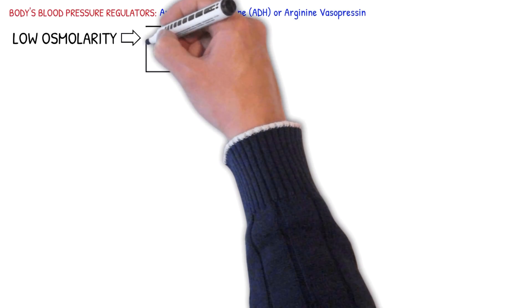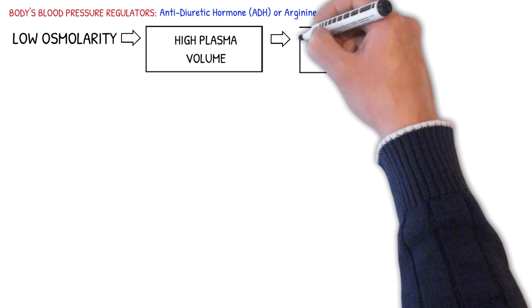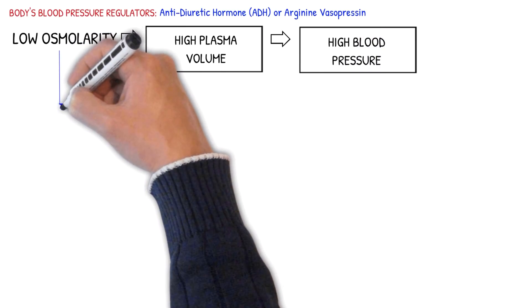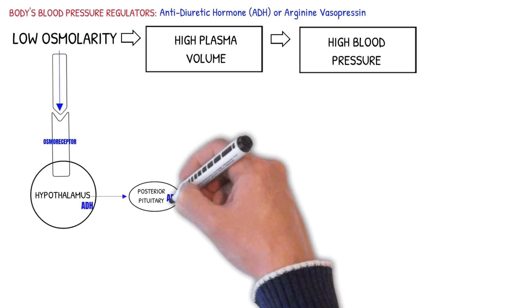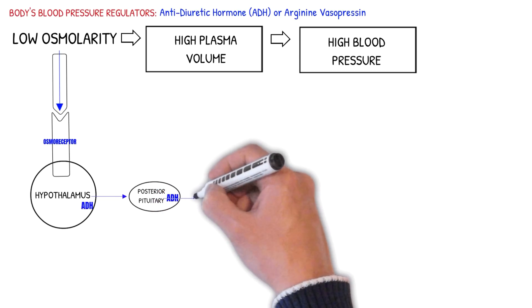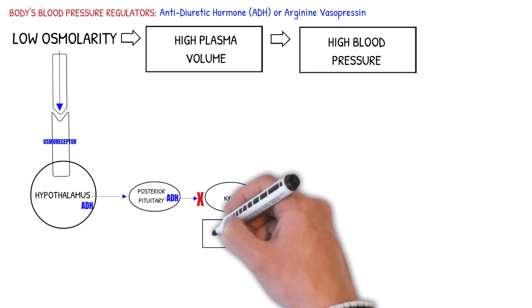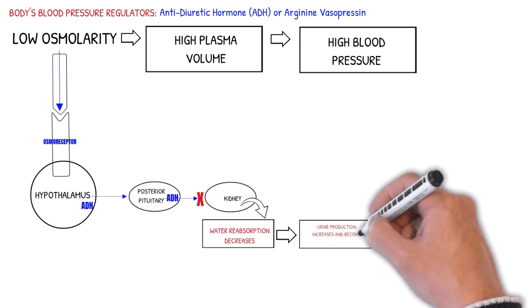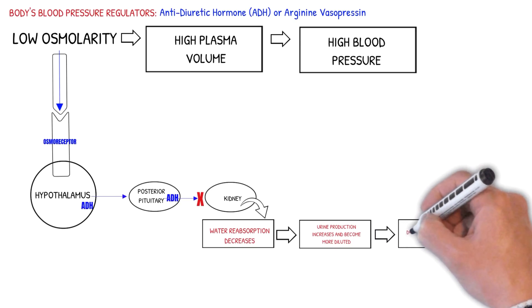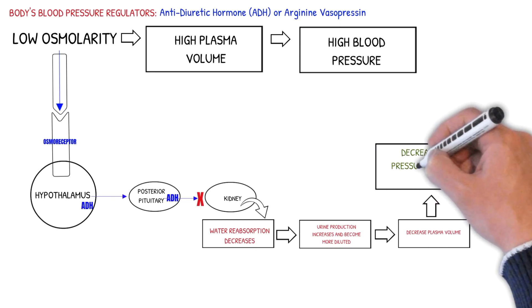During a low osmolar state — meaning you have more water in the body or are hypervolemic with high blood pressure — the osmoreceptors in the hypothalamus sense it and inhibit the release of ADH or vasopressin. The absence of ADH decreases water channels or aquaporins in the kidney, so water absorption decreases and more water is excreted in the urine. The urine becomes more diluted, and increased water excretion leads to a decrease in plasma volume and decreased blood pressure.